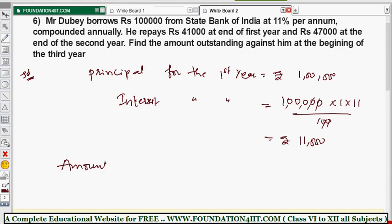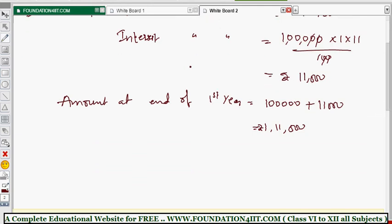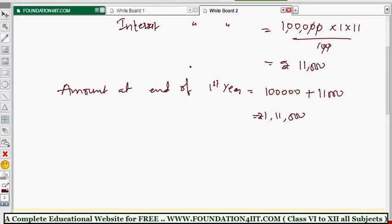The amount at the end of the first year is the principal plus interest: one lakh plus eleven thousand equals one lakh eleven thousand. According to the problem, he repaid 41,000 at the end of the first year, so that should be removed from the total to get the principal for the next year. Repayment at the end of the first year is rupees 41,000.